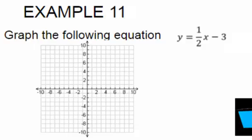I'm going to graph the line y equals one-half x plus 3. So this is a line that has a positive slope. It'll be going up from left to right, and it starts at negative 3.